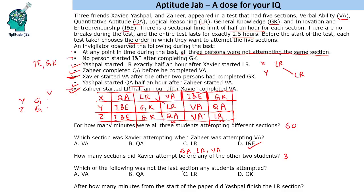Which of the following was not the last section any student attempted? The last sections were GK, QA, and LR for the three students — VA was not the last section that any one of them attempted. After how many minutes from the start of the paper did Yashpal finish the LR section? LR was Yashpal's third section, so he finished it after 90 minutes from the start of the paper. That is the solution to the set.